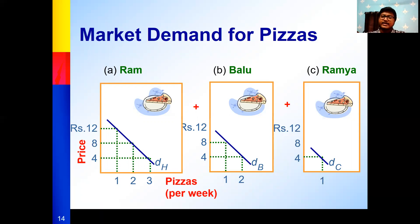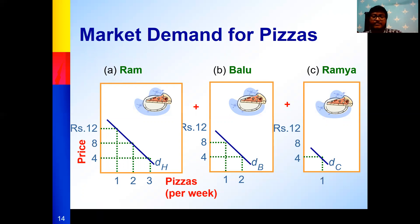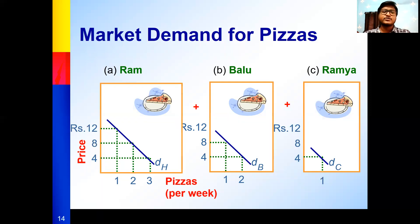The main difference between individual demand and market demand is: in individual demand, you talk about only one person — say, Ram — and how he behaves in the market. In market demand, you talk about all individuals together. In a market with only Ram, Balu, and Ramia, market demand is simply the sum of all their individual demands. Individual demand focuses on a single consumer; market demand focuses on all consumers together.